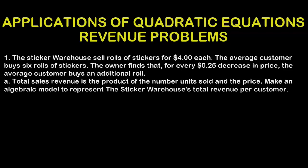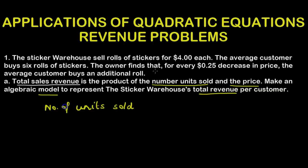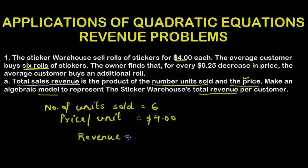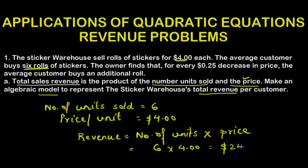Part A: total sales revenue is the product of the number of units sold and the price. Make an algebraic model to represent the sticker warehouse's total revenue per customer. They have already given us the meaning of total sales revenue. So we find the number of units sold, which is six rolls, and the price per unit, which is four dollars. Revenue equals number of units sold multiplied by the price, giving us six times four, which is twenty-four dollars.